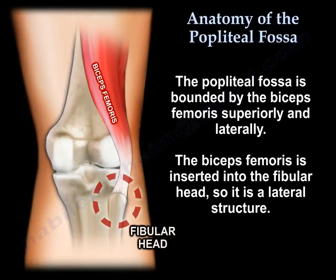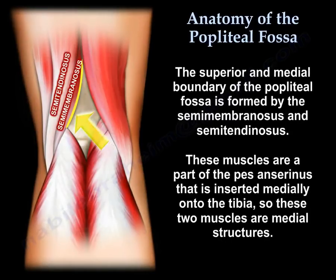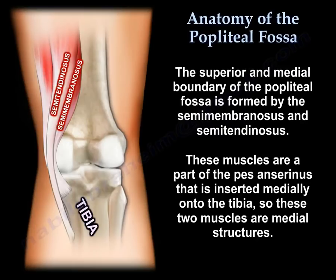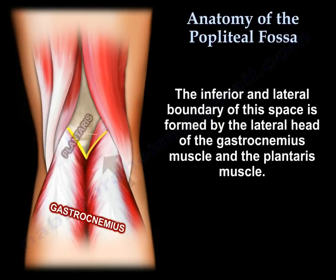The biceps femoris is a lateral structure. The superior medial boundary of the popliteal fossa is formed by the semimembranosus and semitendinosus, which are part of the pes anserinus and insert medially on the tibia. The inferior medial boundary is made by the medial head of the gastrocnemius, and the inferior lateral boundary by the lateral head of the gastrocnemius and the plantaris.